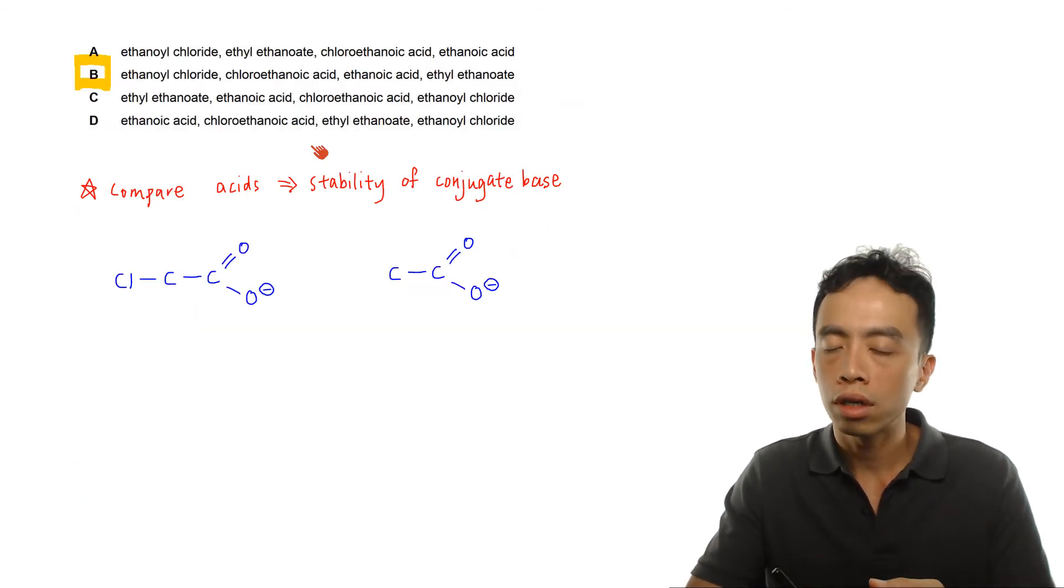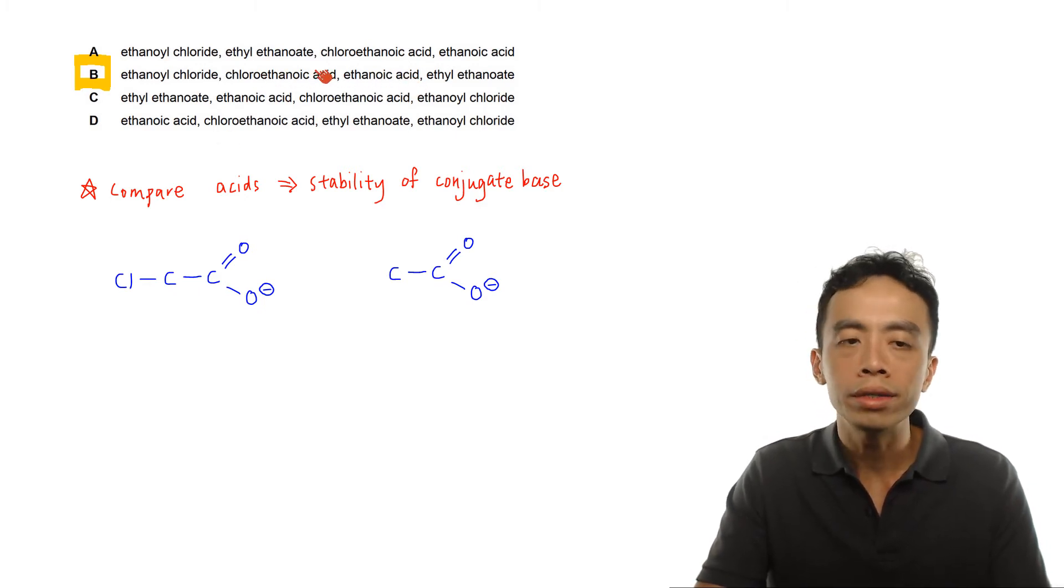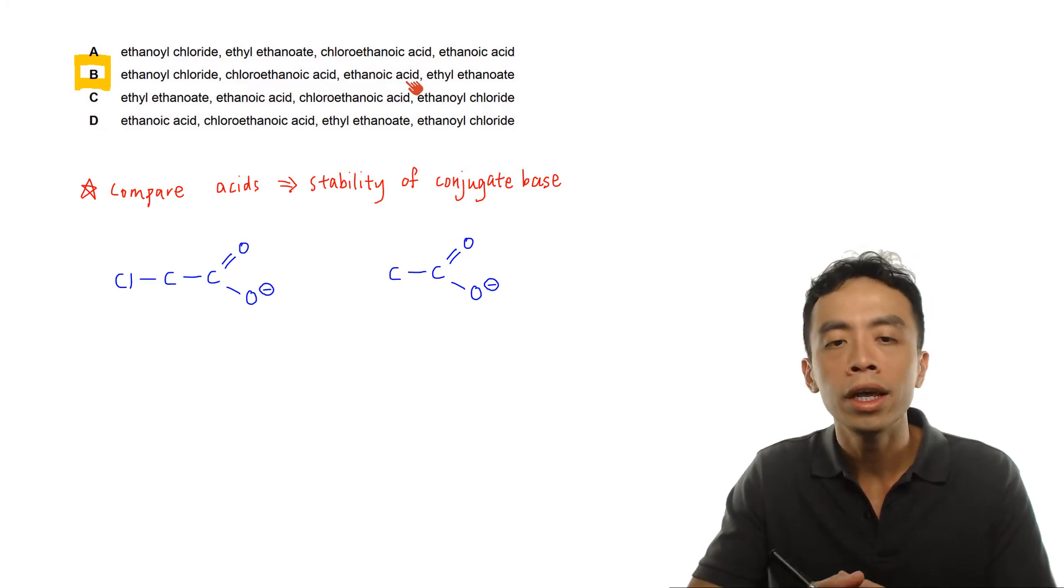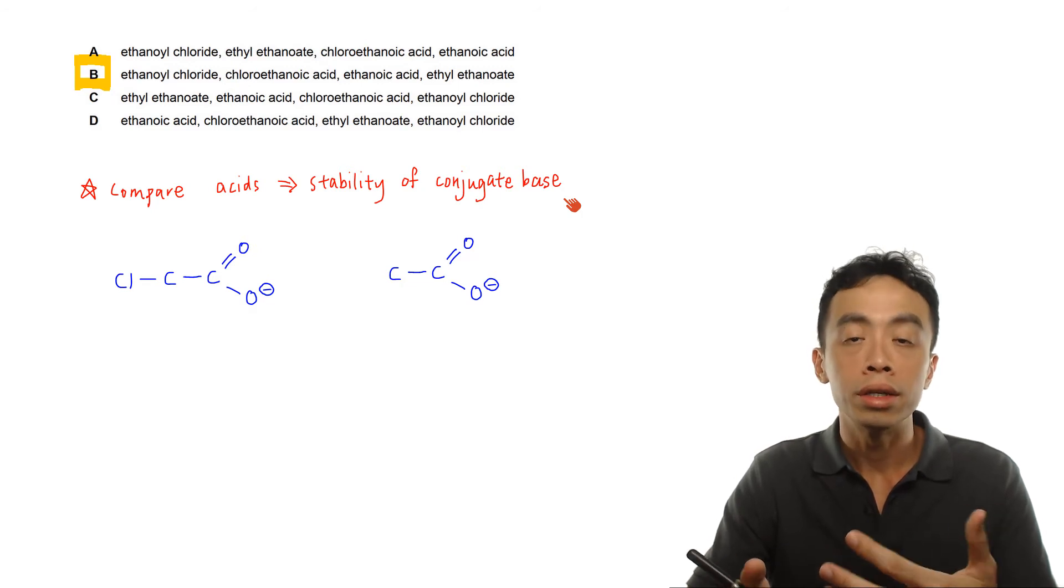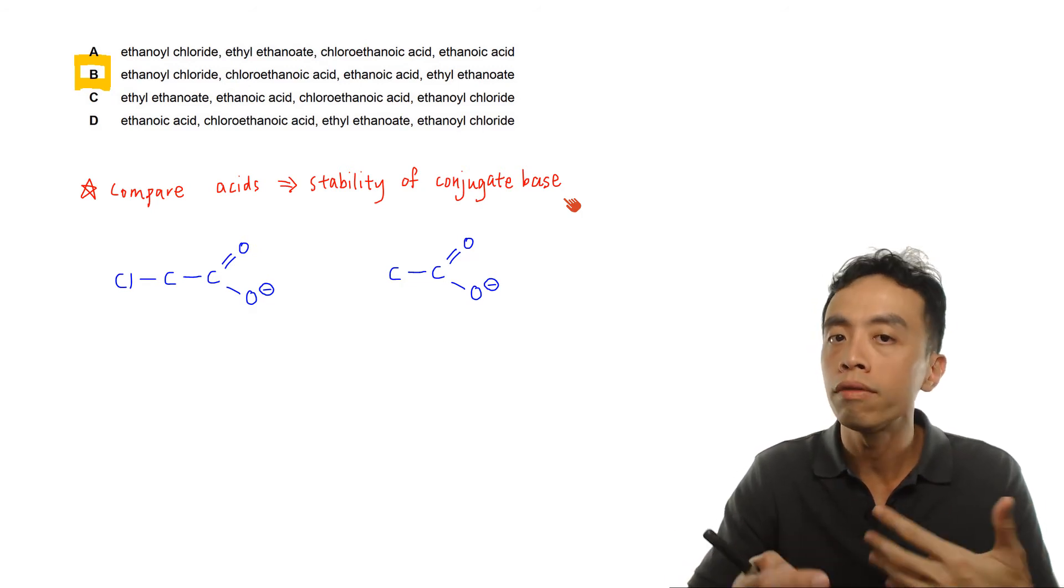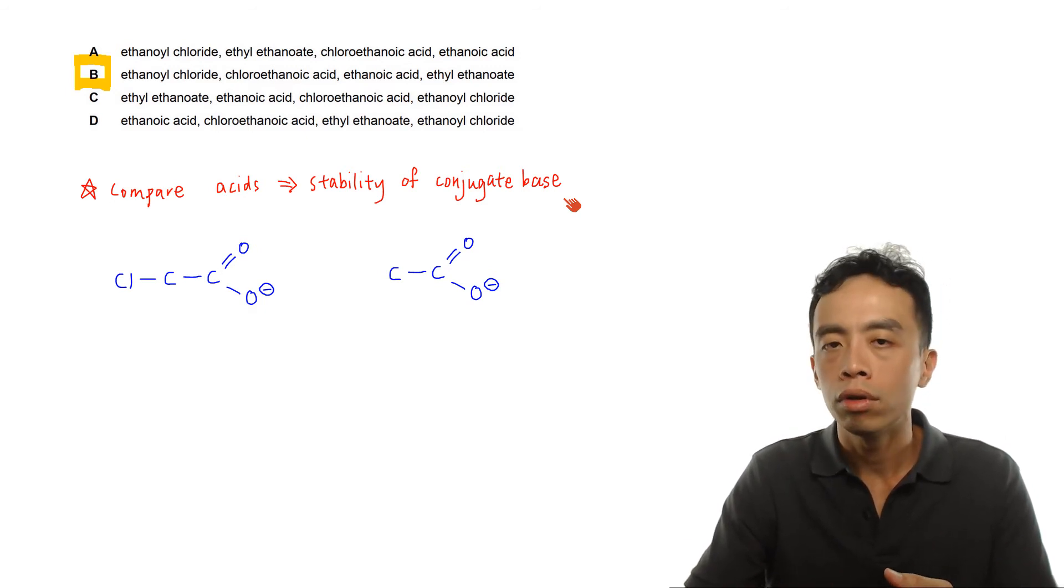For the sake of discussion, let us compare the acidity for chloroethanoic acid and ethanoic acid. Why is it the case that chloroethanoic acid is more acidic than ethanoic acid? The concept for acidity in organic chemistry is the stability of the conjugate base. If the conjugate base is more stable, the system will favor dissociation of the weak acid to form the more stable conjugate base, releasing more H⁺, so that weak acid is more acidic.